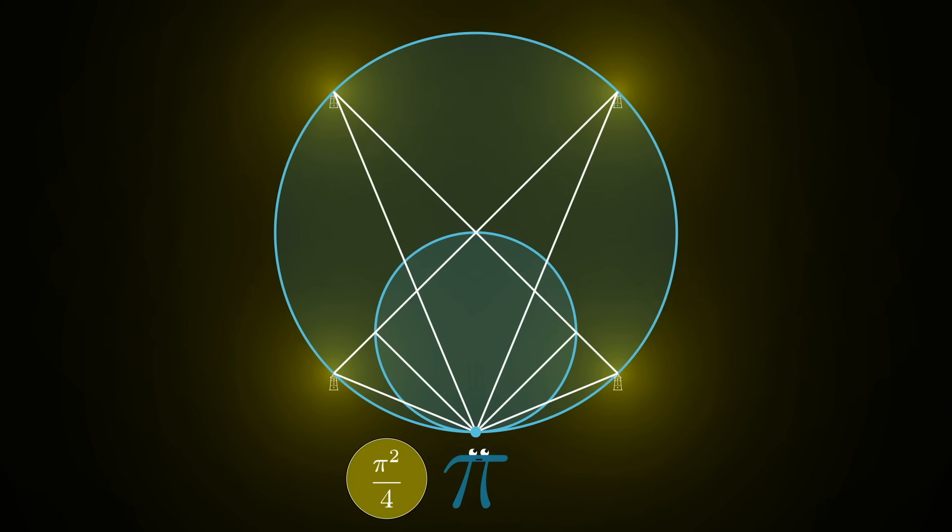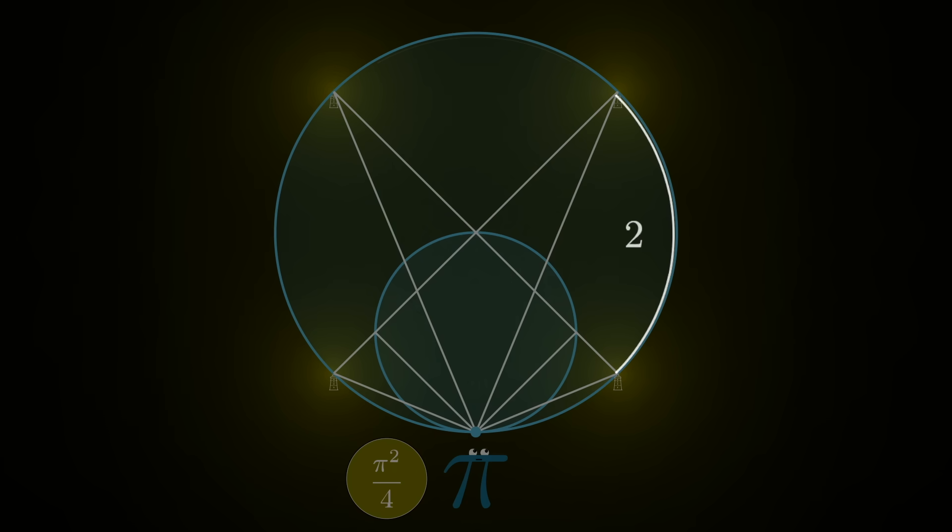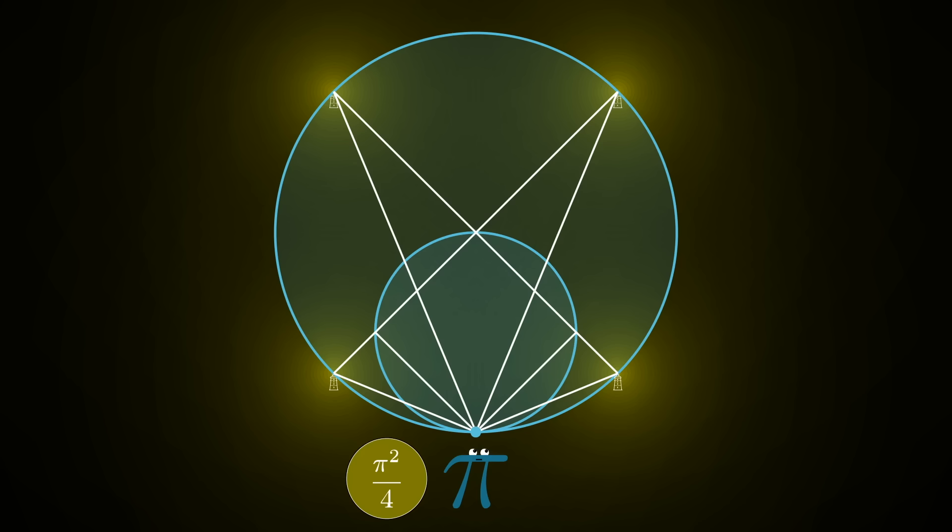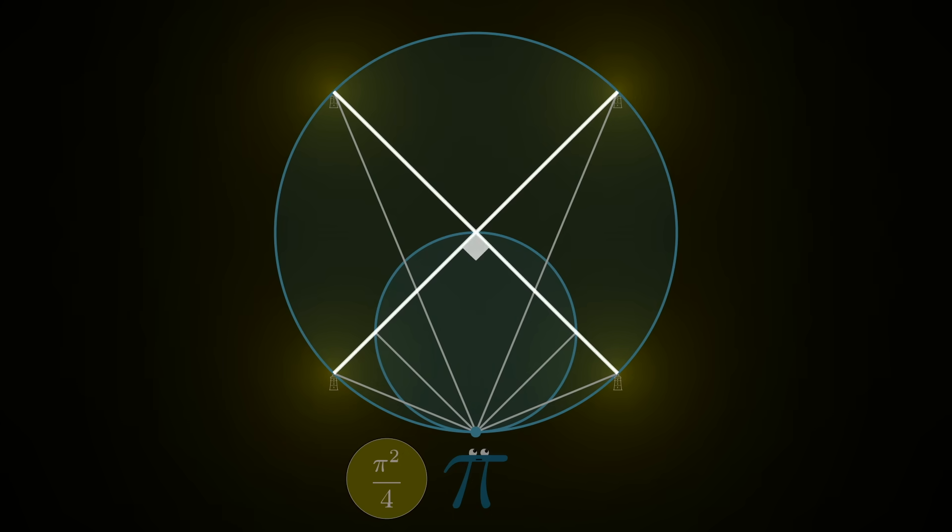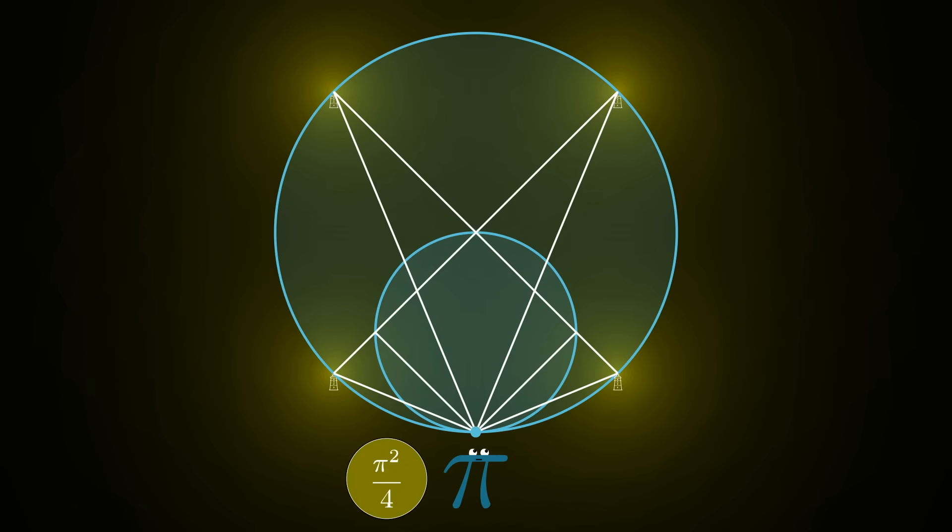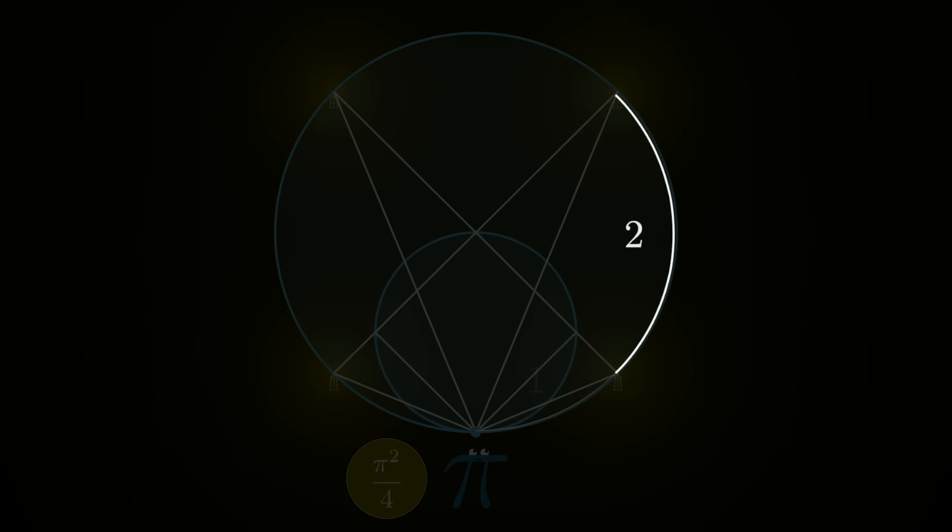And even nicer, these four lighthouses are all going to be evenly spaced around the lake. Why? Well the lines from those lighthouses to the center are at 90 degree angles with each other. So since things are symmetric left to right, that means that the distances along the circumference are 1, 2, 2, 2, and 1.